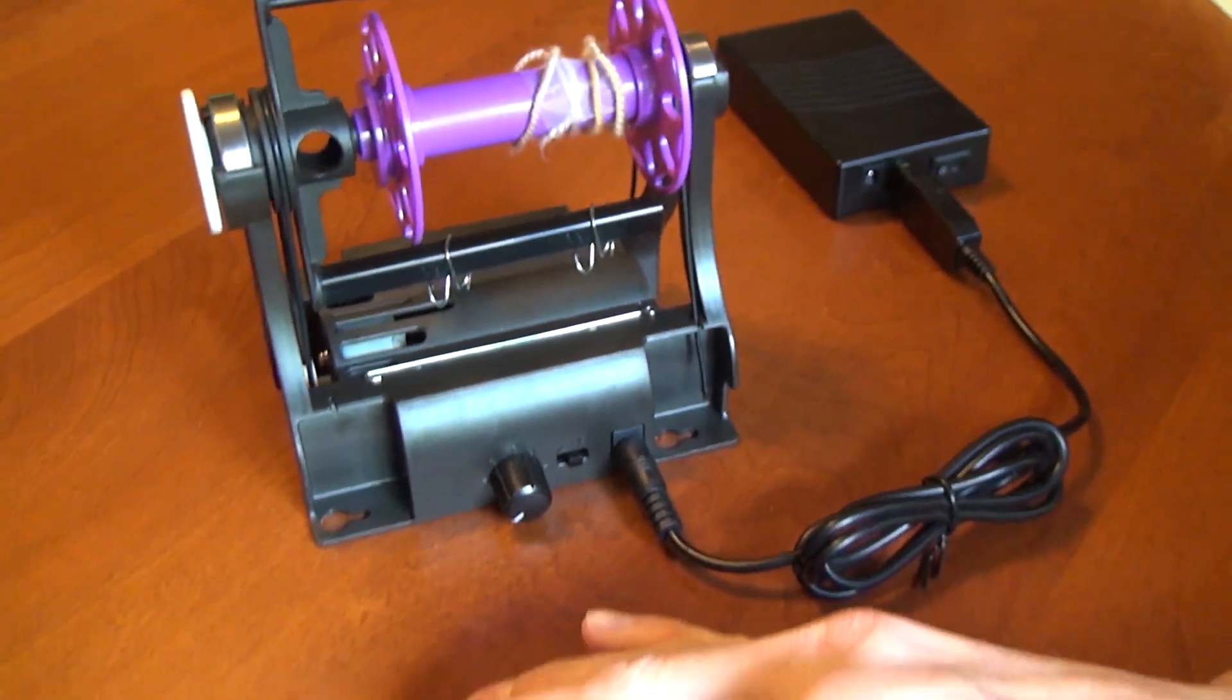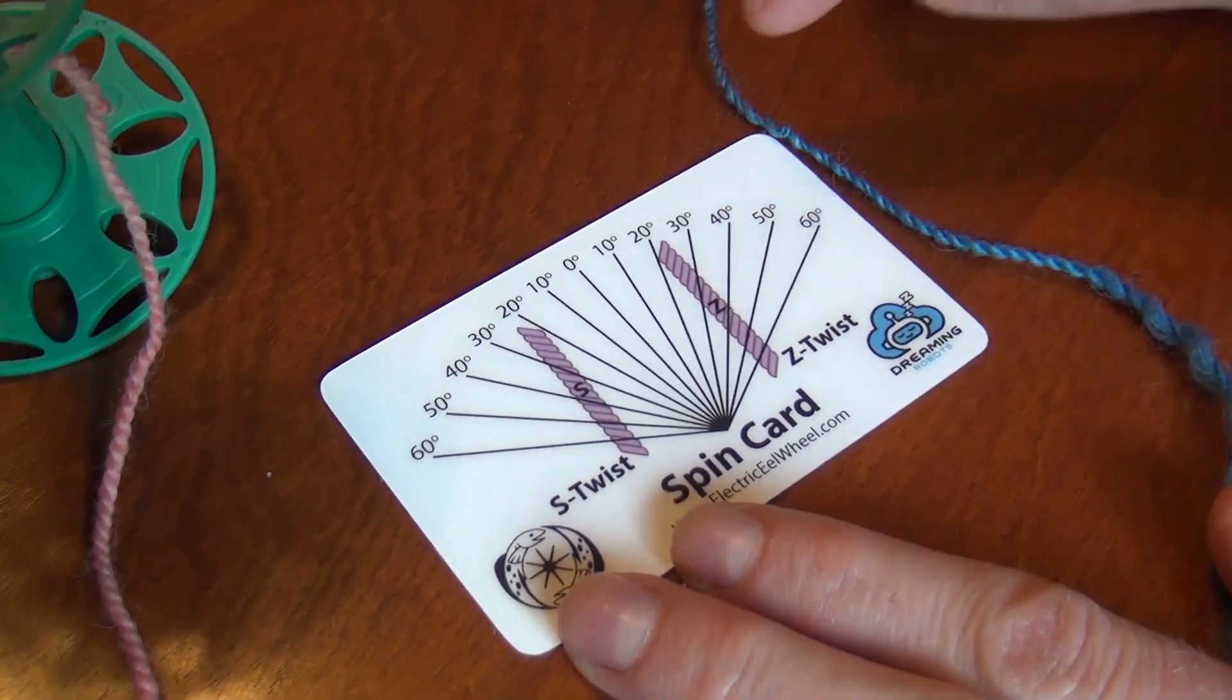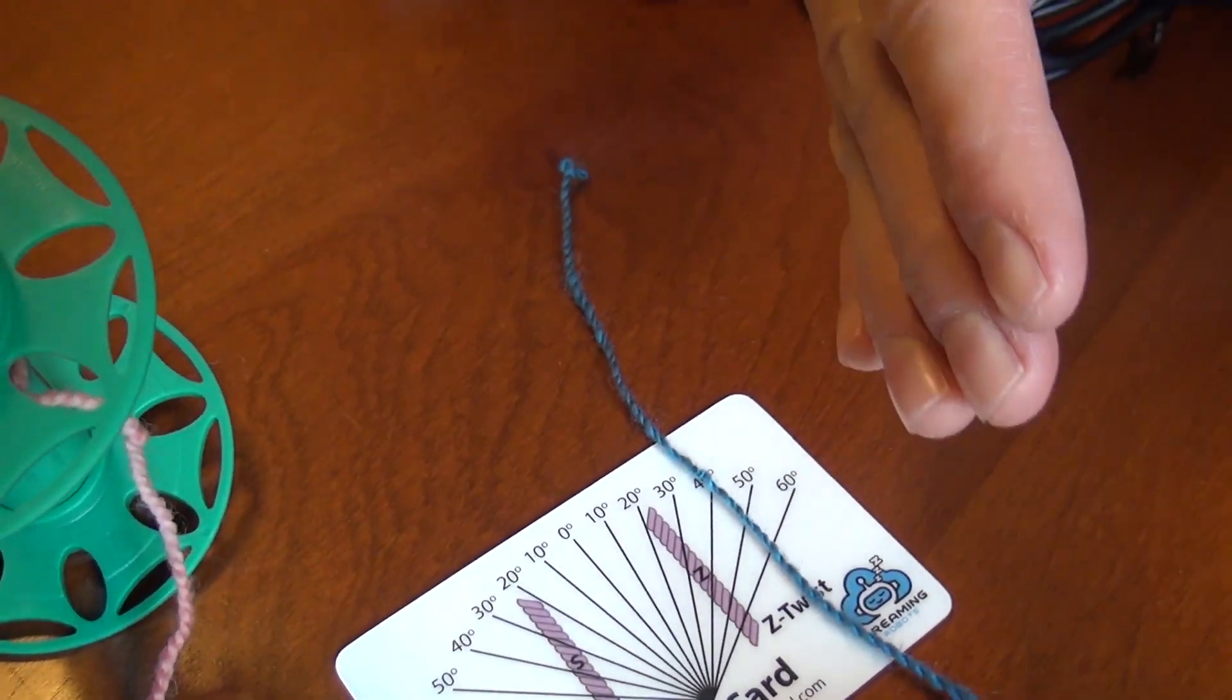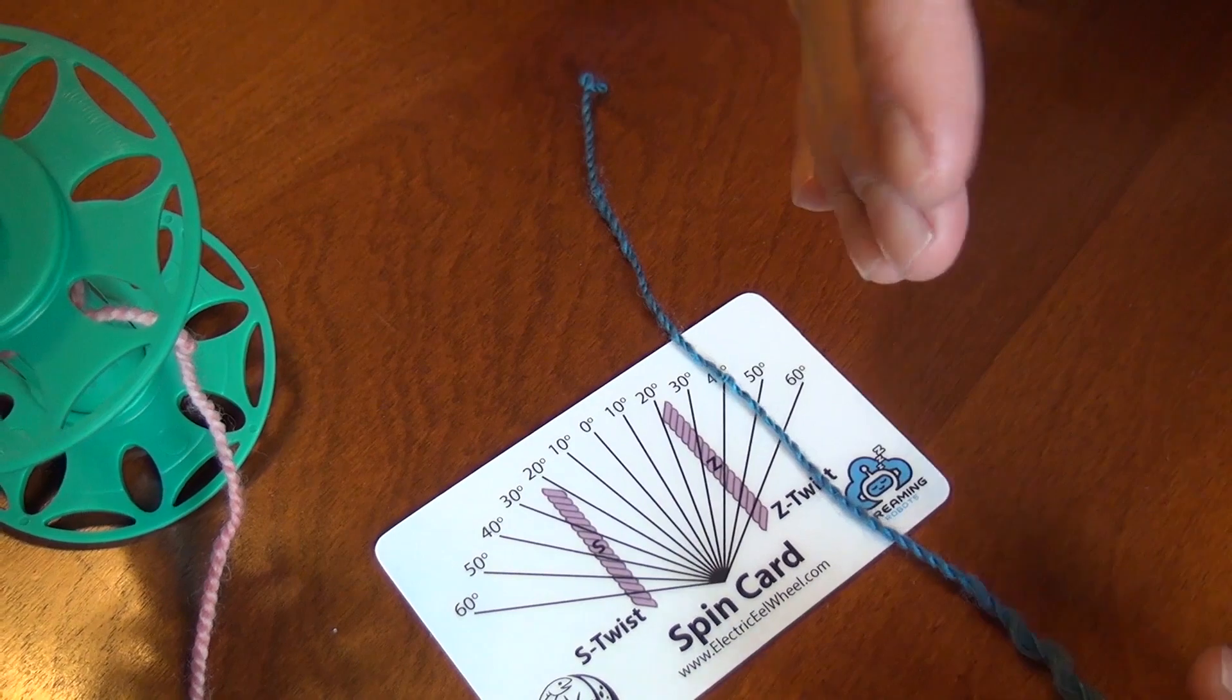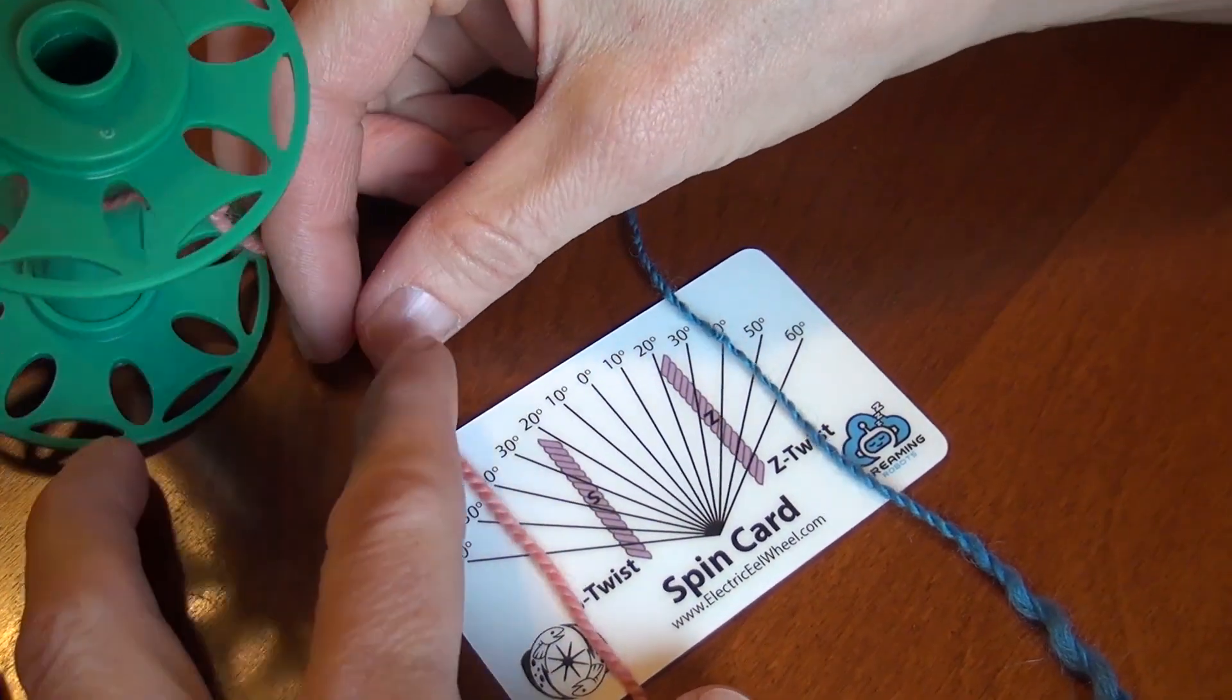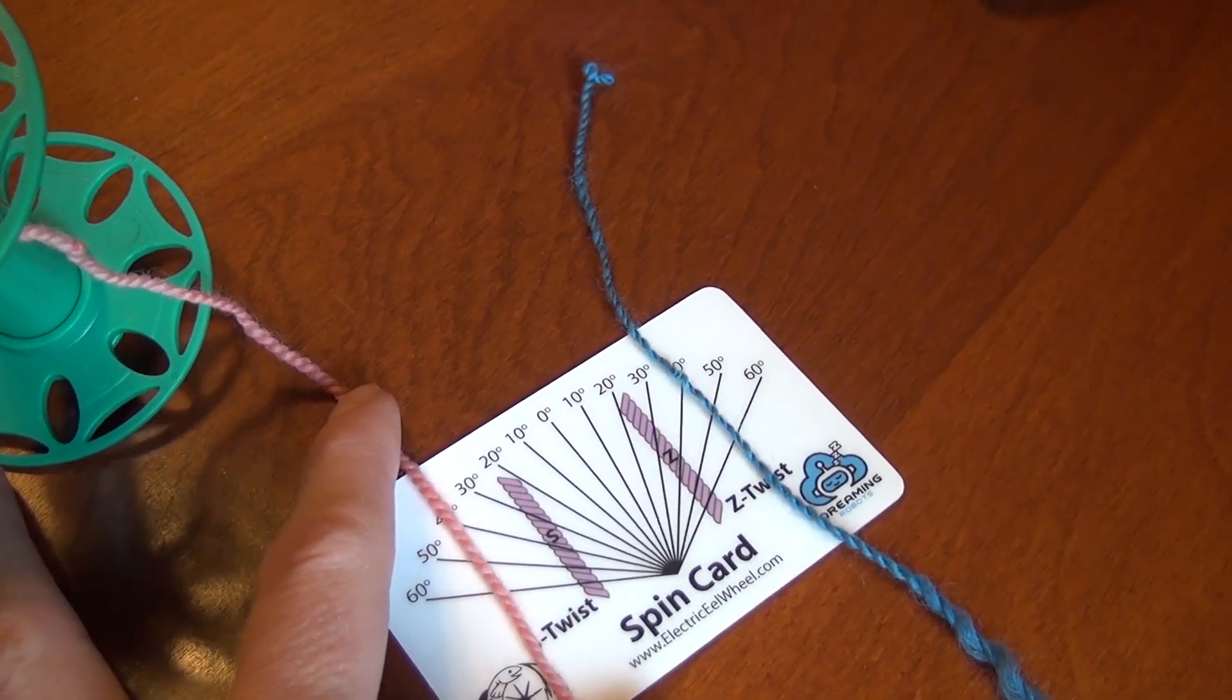The Nano comes with this spin card that helps you determine the direction of the twist in your yarn. See how the angle of the yarn matches the slope of the middle part of the Z and with this the yarn matches the middle part of the S. That is how you determine if you have Z or S twist in your yarn.